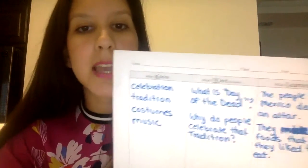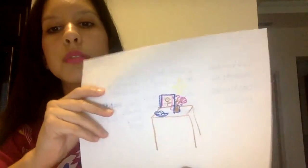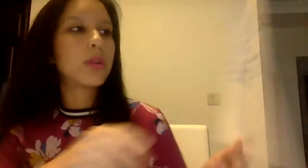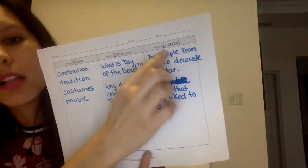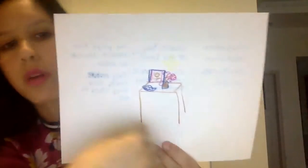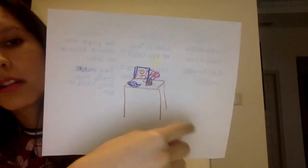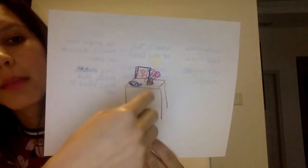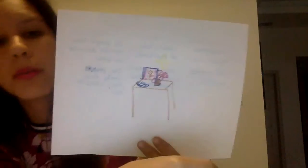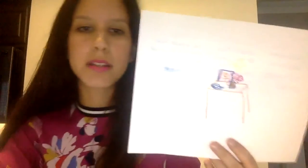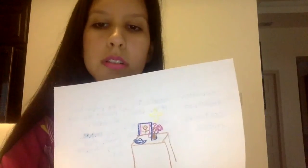Lastly, using the same paper on the back, your child will draw what he wrote and what he learned about the story. For example, I drew an altar with a frame, some flowers, and some sweet bread. Then your child can present their drawing and explain what he or she learned.